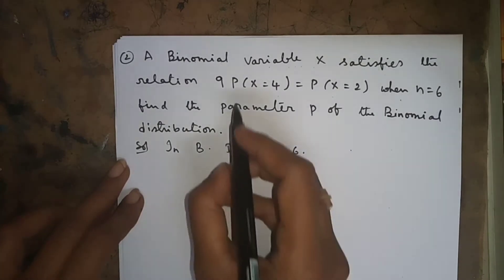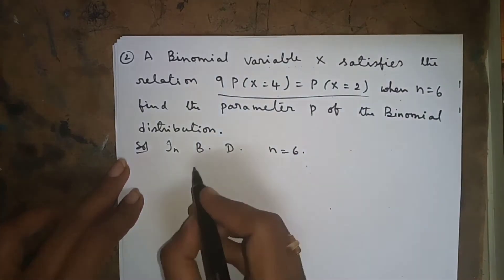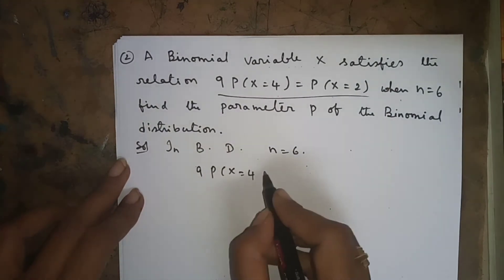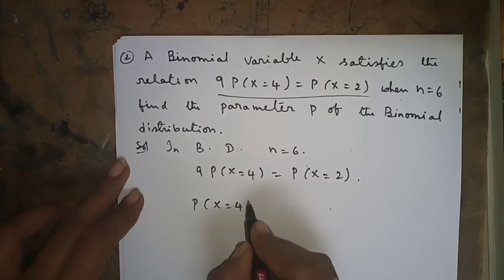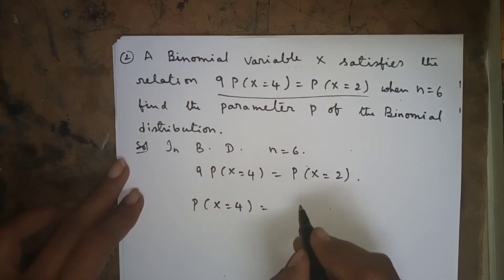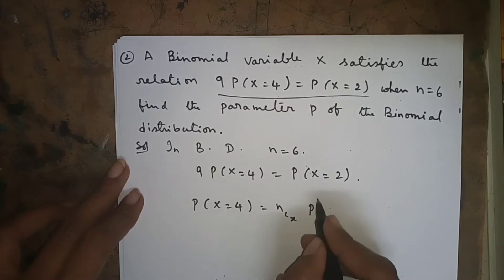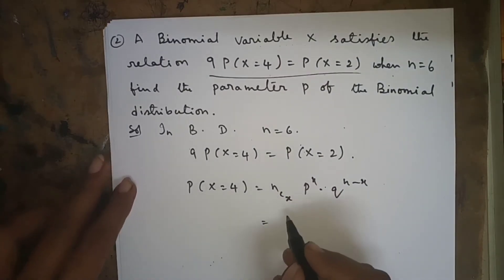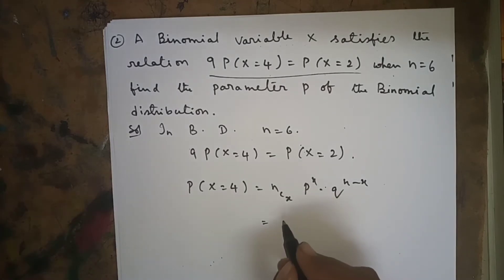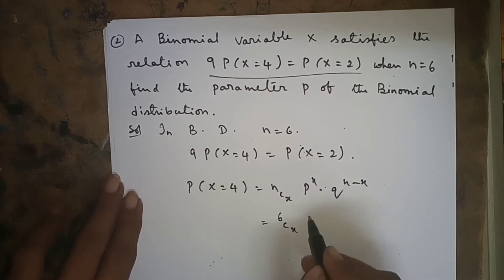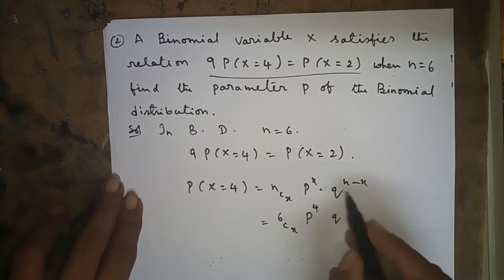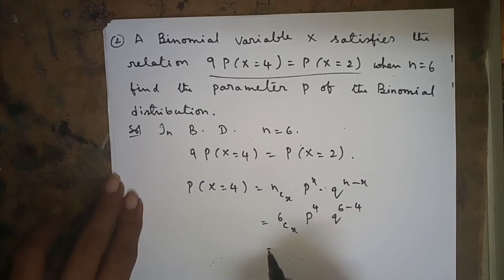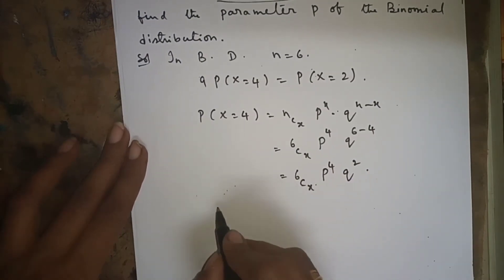The relation given is 9 into P(x=4) = P(x=2), with n=6. First we find P(x=4). The formula for binomial distribution is nCx * p^x * q^(n-x). With n=6: P(x=4) = 6C4 * p^4 * q^(6-4) = 6C4 * p^4 * q^2.